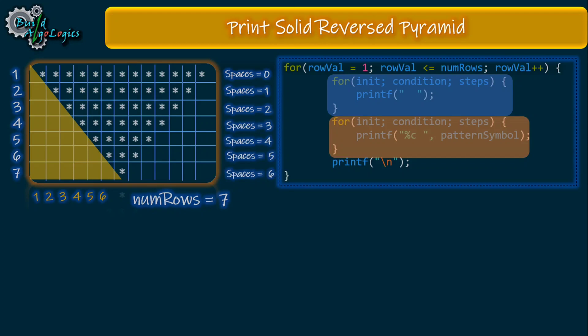As the number of rows are seven, our outer loop will run seven times. The row value is varying from one to seven. For the first row, row value is one, for the second row it is two, for the third row the row value is three, and so on.